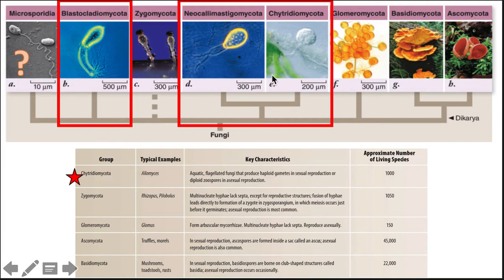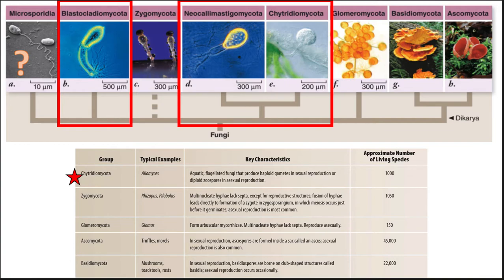The five groups are: Chytridiomycota — boxed together with Neocallimastigomycota and Blastocladiomycota, which fall under the umbrella of chytrids. Then Zygomycota, shown with a dashed line because they are not monophyletic — every other phylum is monophyletic except Zygomycota. Then Glomeromycota, Ascomycota (the sac fungi), and Basidiomycota (the club fungi).